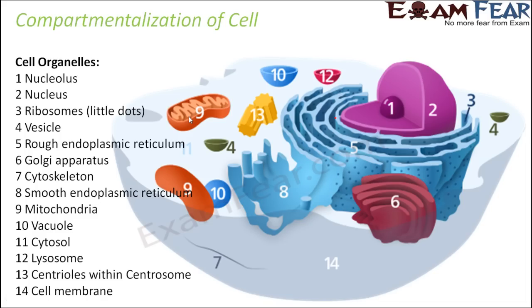We will now talk about each of these organelles a little later. We will also see in what types of organisms we see compartmentalization of the cell, and in what types of organisms we don't — because cell compartmentalization doesn't happen everywhere. There are some organisms where the cells are not compartmentalized, and inside those cells all the components are just scattered here and there.